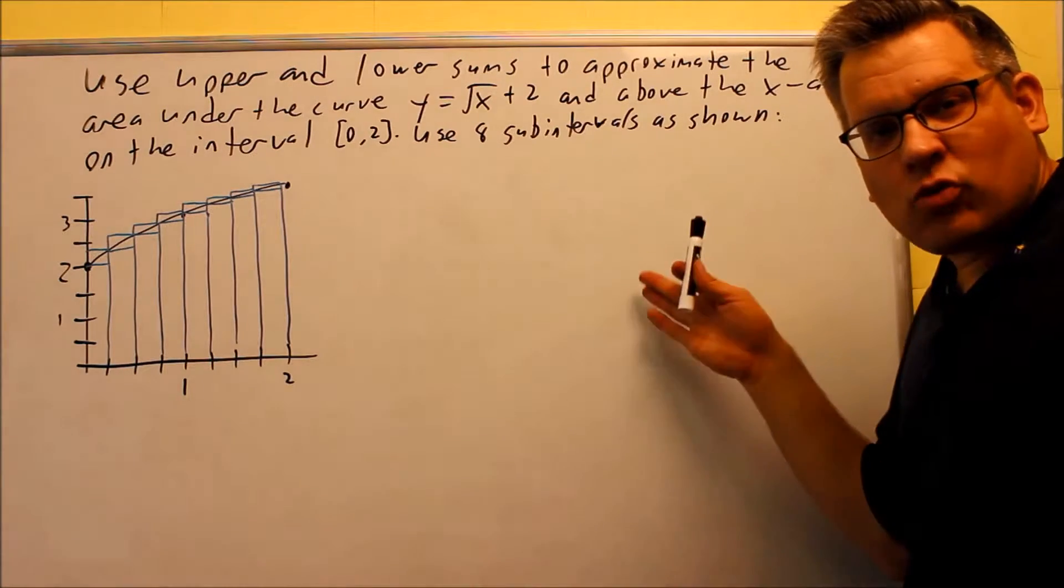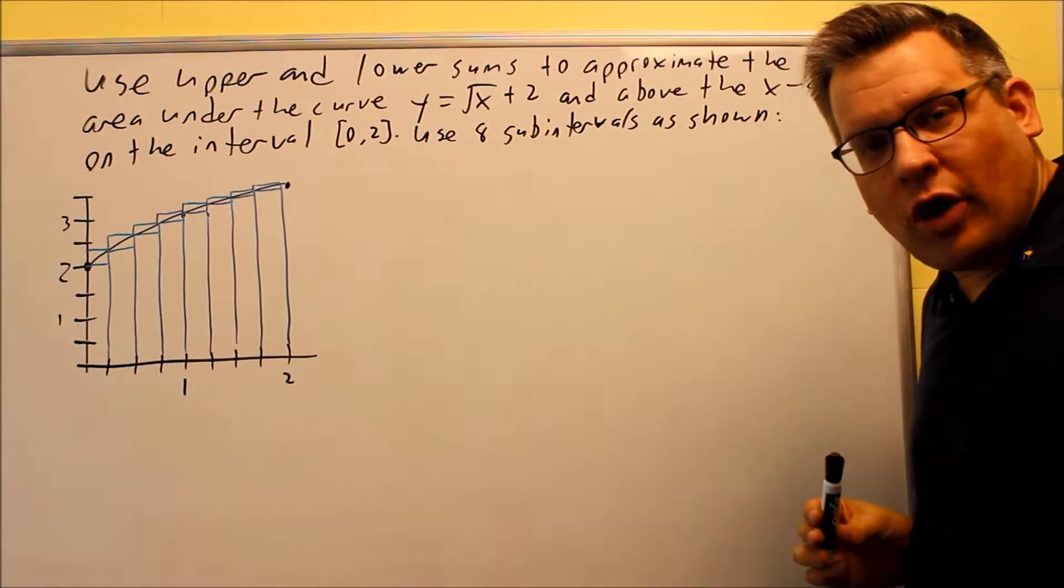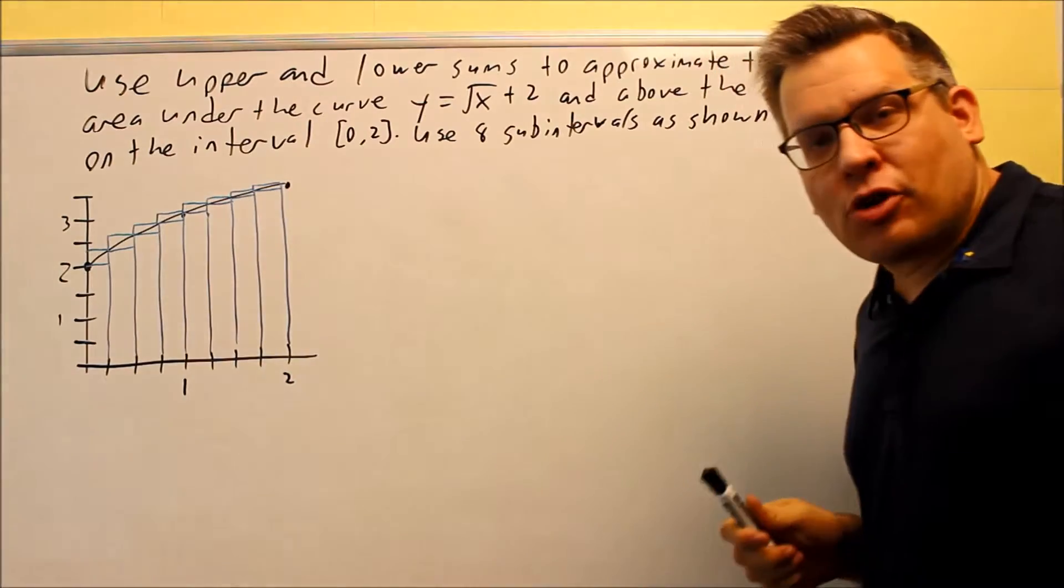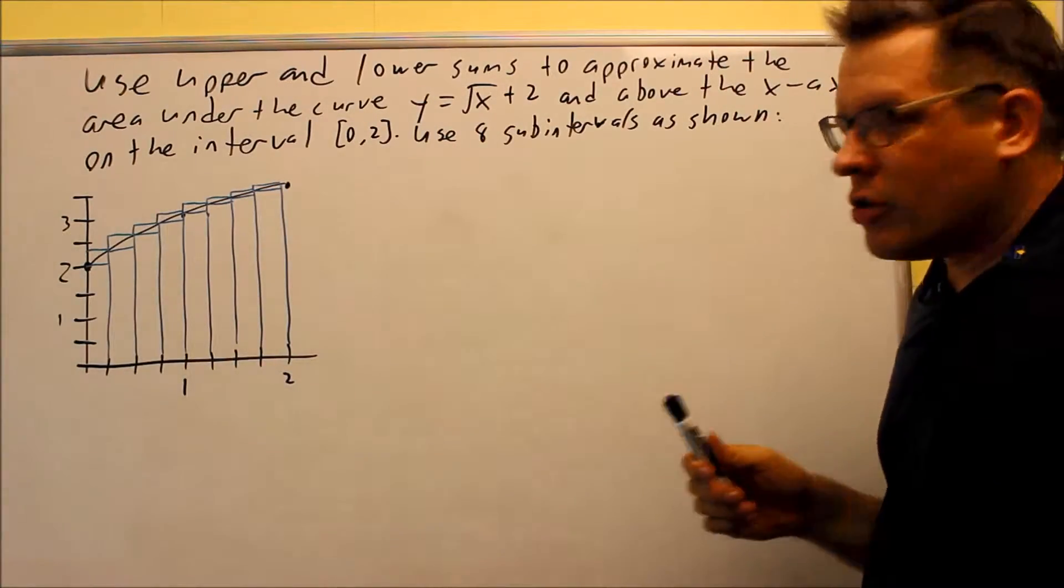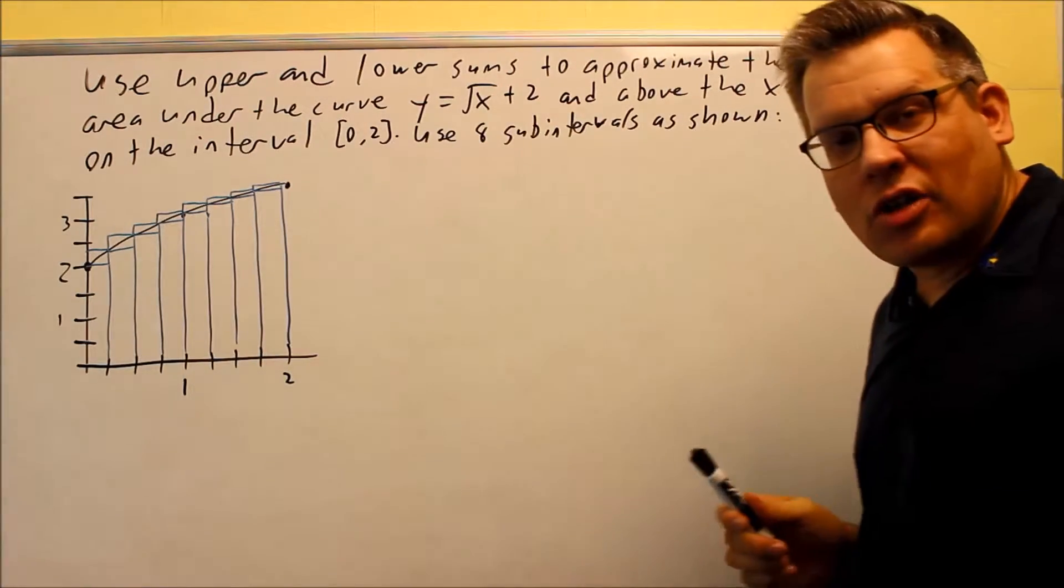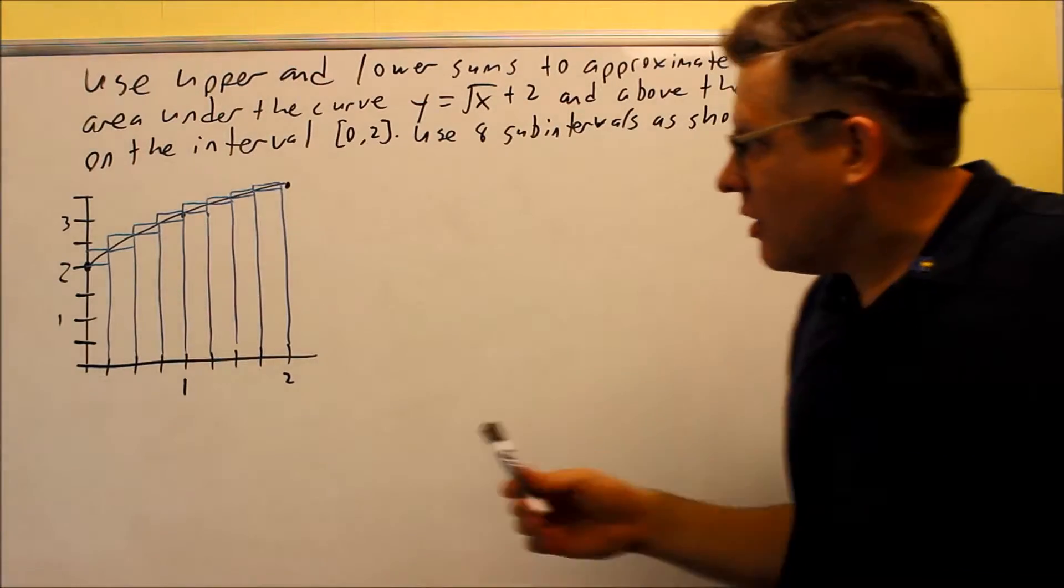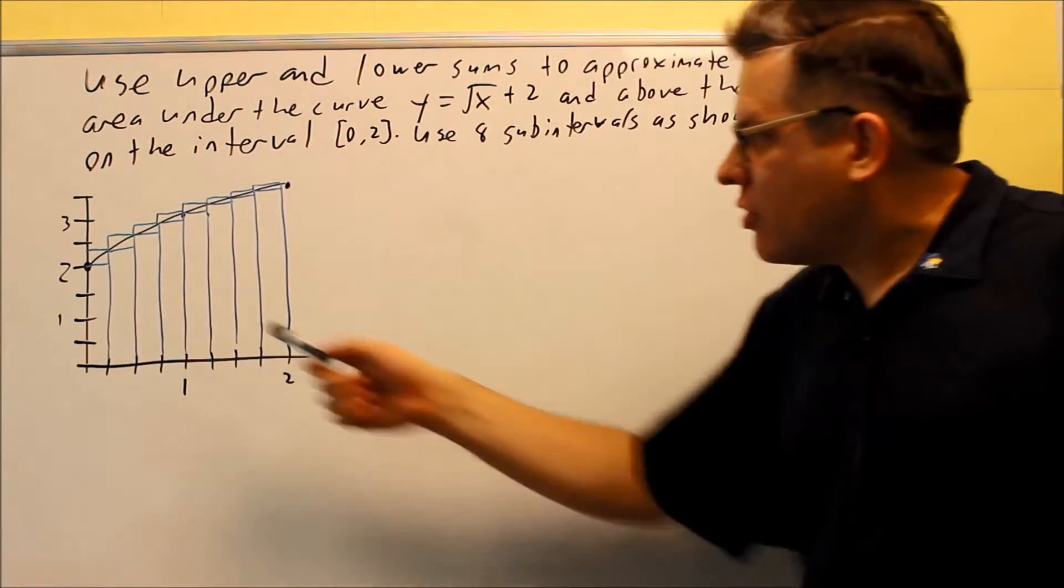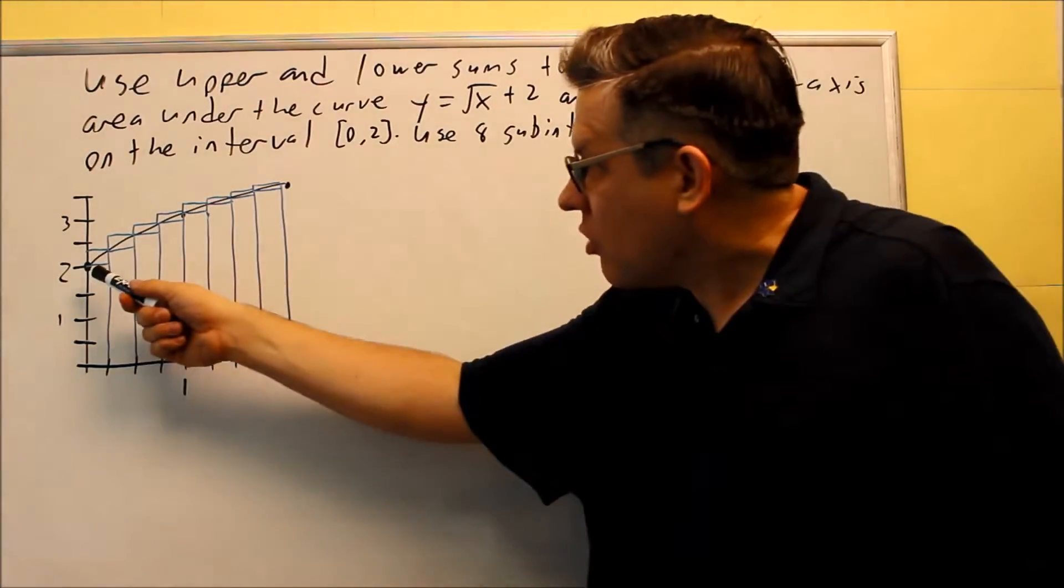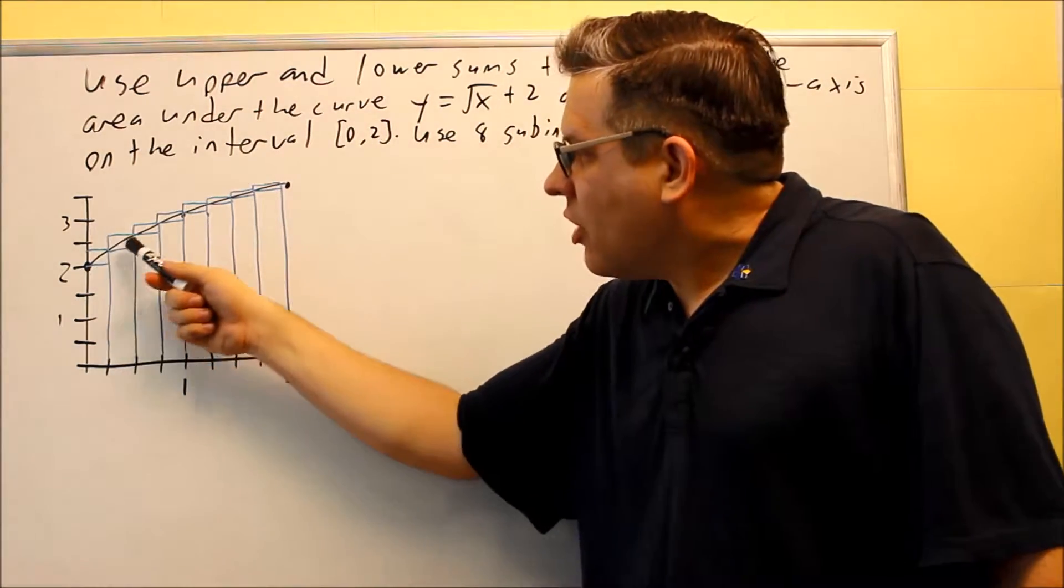For this problem, instead of just working with the picture, they now actually give us an equation that we can use to be a little bit more accurate, so we don't have to estimate heights off of the picture itself. So this picture has been provided for us. Here's our function, square root of x plus 2. We're working only between 0 and 2, and it's telling us we have to use 8 sub-intervals. So a picture has been drawn for us that already shows the 8 different rectangles that we're going to be using, and in fact, it's actually giving us a drawing of the upper and lower sums all at the same time.